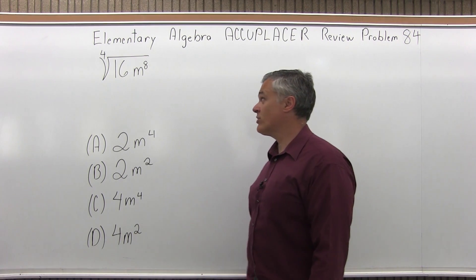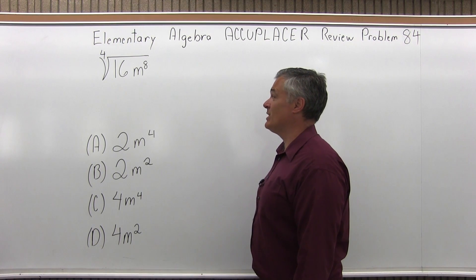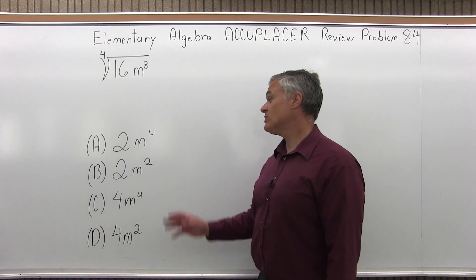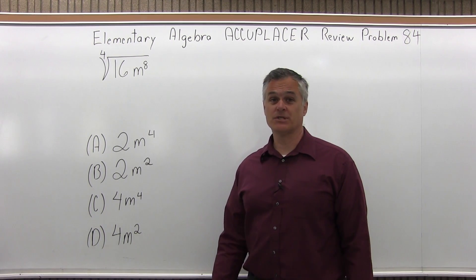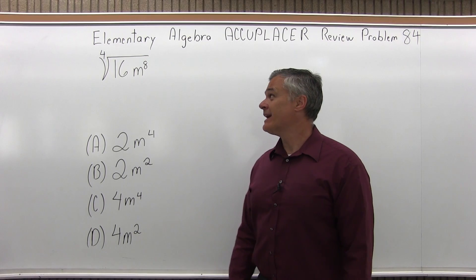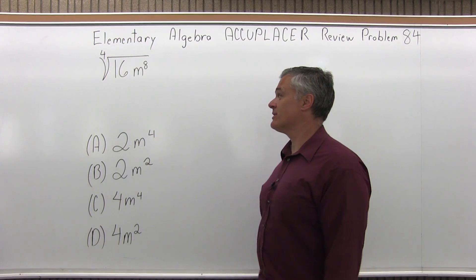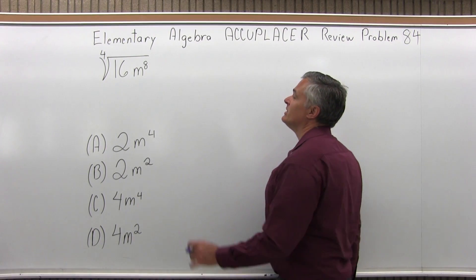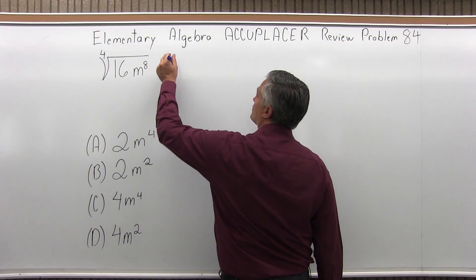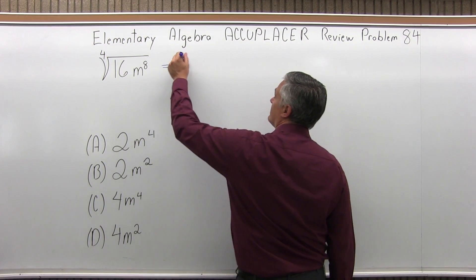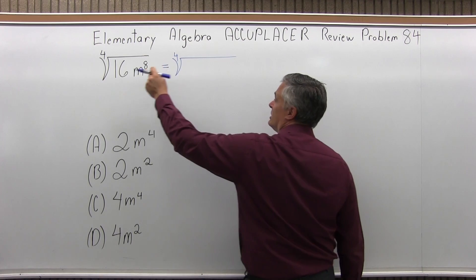We have the fourth root of 16m to the eighth power — which one of the following four options does it equal? That fourth root is a strange looking thing, but to simplify it, what I'm going to do is rewrite the things that are underneath that fourth root.